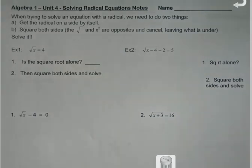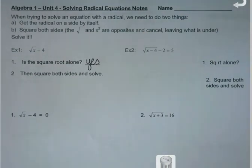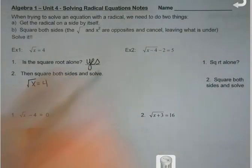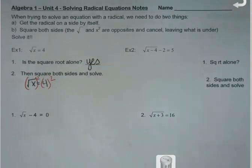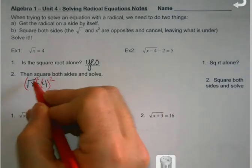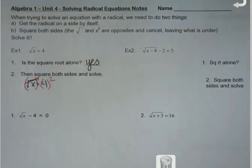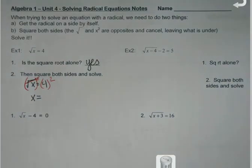This first one, the square root is on a side by itself right now. There's not something else that I'm plusing or minusing to it or multiplying it by. So all I'm going to do then is take this and square both sides of the equation. Take it to the second power because the squared and the square root cancel.